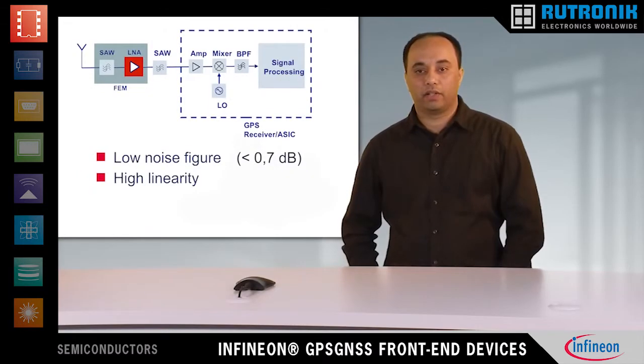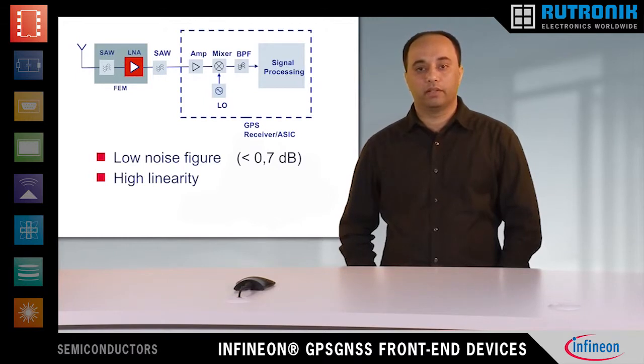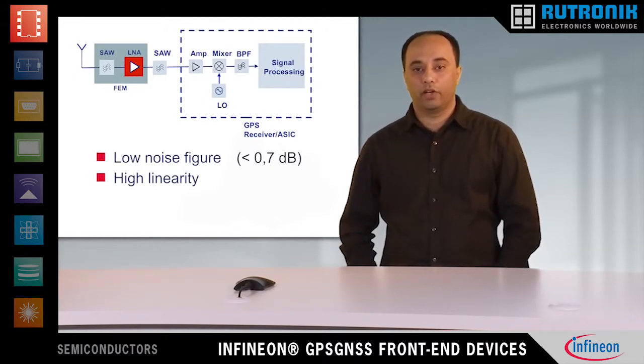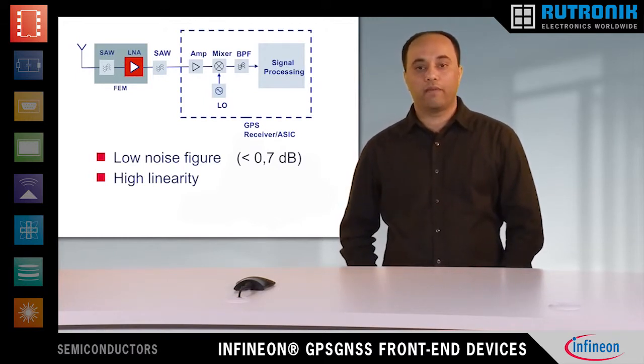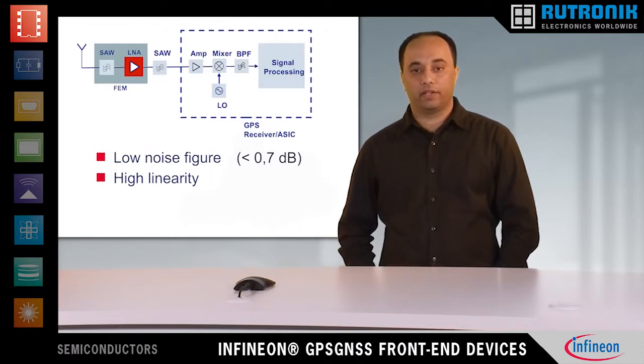High linearity is also important. To ensure that the performance of the GPS receiver is not degraded by the neighboring cellular modems, the LNA or module should have excellent out-of-band linearity.